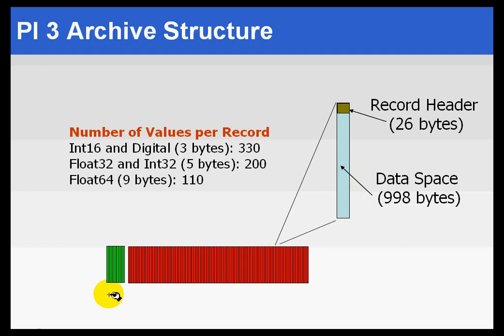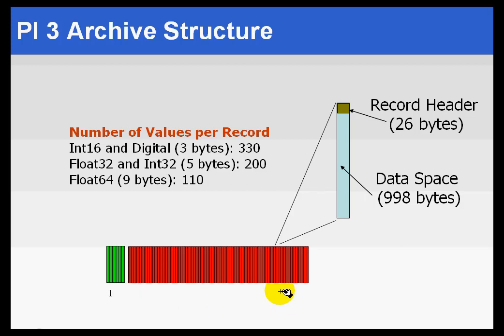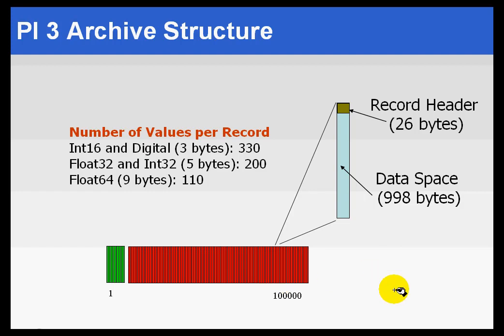You're going to have a 1K record stretching from record number 1 over here to record number 100,000 over here. So, 100,000 1K records is 100MB. We're going to occupy the first portion of this in these primary records — one record per tag in the system.